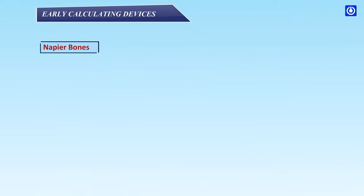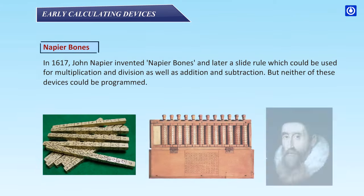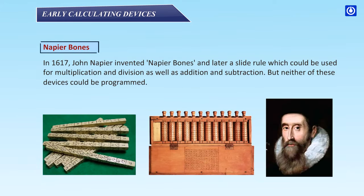Napier Bones: In 1617, John Napier invented Napier Bones and later a slide rule, which could be used for multiplication and division as well as addition and subtraction. But neither of these devices could be programmed.